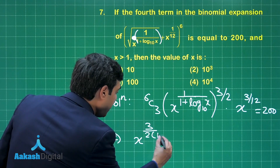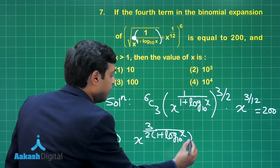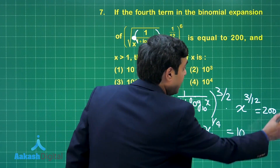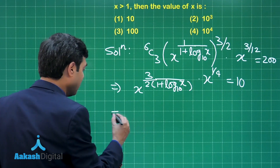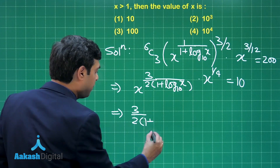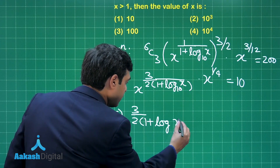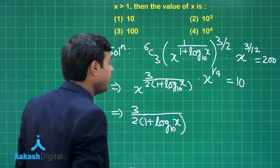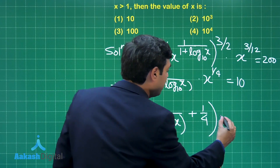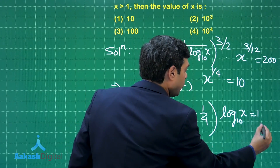We have x raised to the power 3/2 times (1 + log x to the base 10) in the denominator, multiplied by x raised to the power 1/4, equal to 10. Now if we take log on both sides to the base 10, we get: 3/2 times (1 + log x to the base 10), plus 1/4 multiplied with log x to the base 10, is equal to 1.